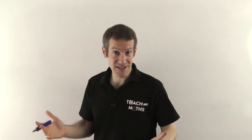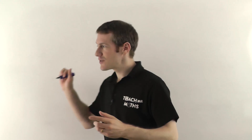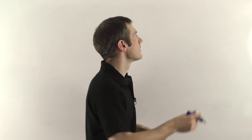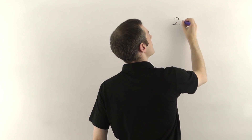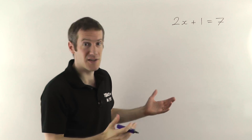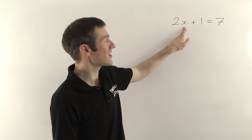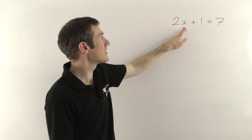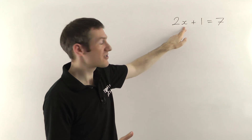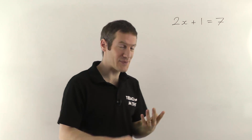Before the proper transposition example, let me give you a quick reminder of how it works when you're just solving normal equations. So if we had 2x plus 1 equals 7 — that's a standard equation — we're trying to get the unknown letter, x in this case, by itself. Remember, x just represents a number; we want to get it by itself, so you follow these four steps.